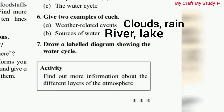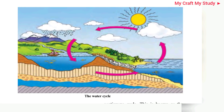Question number 7: Draw a labelled diagram showing the water cycle. The diagram of the water cycle is given on page number 15.